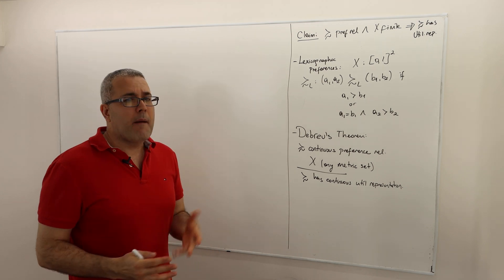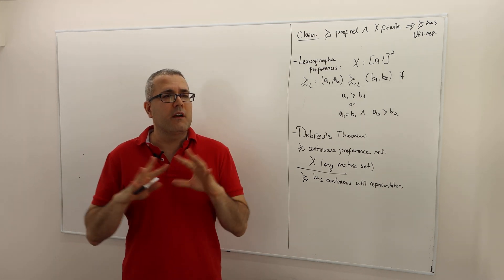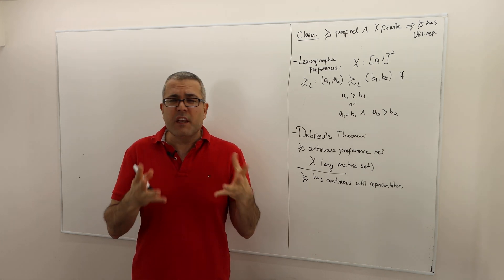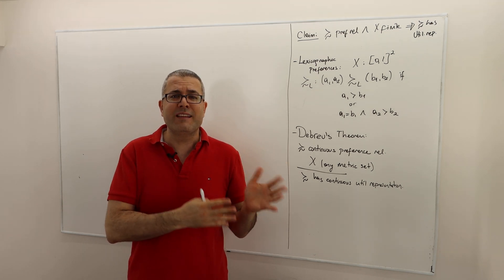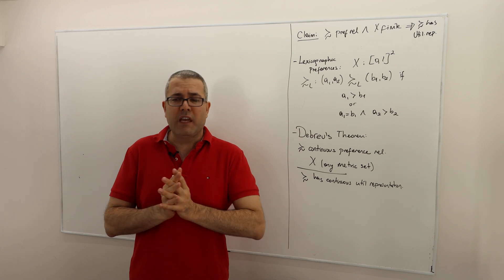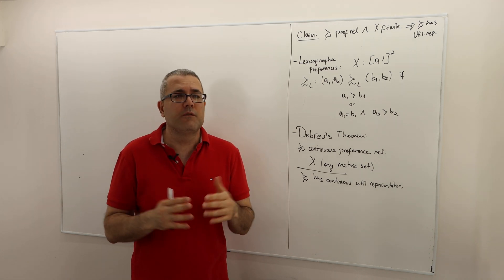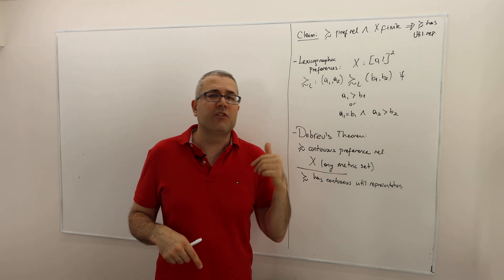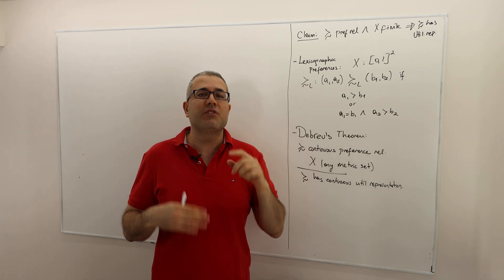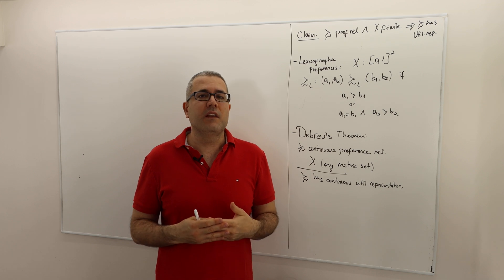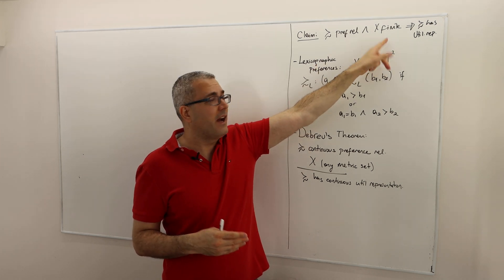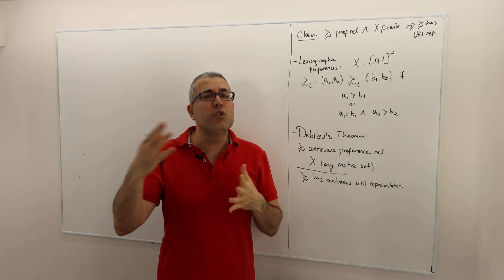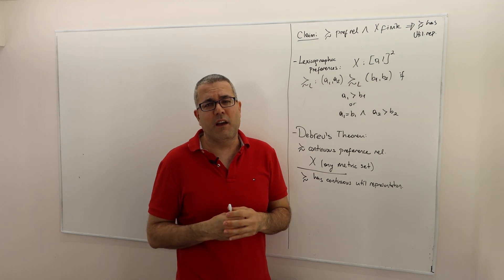So remember our purpose was the following. The very simple example we talked about is the three-alternative example, and I showed you that it is very easy to generate a utility function representing that preference relation. But the question was: can we generalize this conclusion for any X and for any preference relation? What we are fixing is that the binary relation must be a preference relation, meaning it's complete, transitive, and reflexive. If this is the case, and if X is also finite, then the preference relation has a utility representation, and in fact the utility numbers can be natural numbers because X is a finite set.